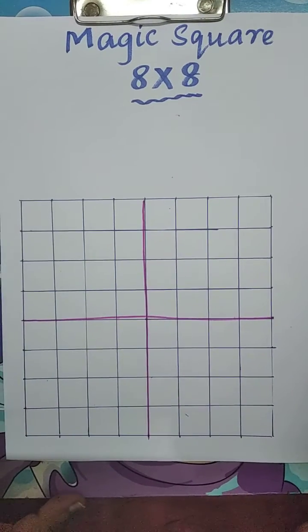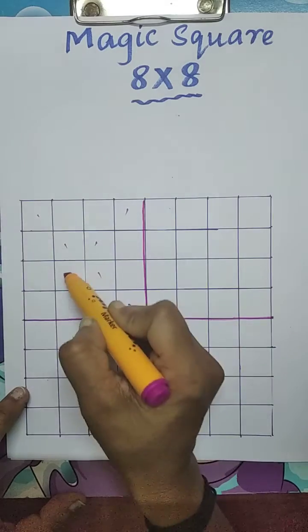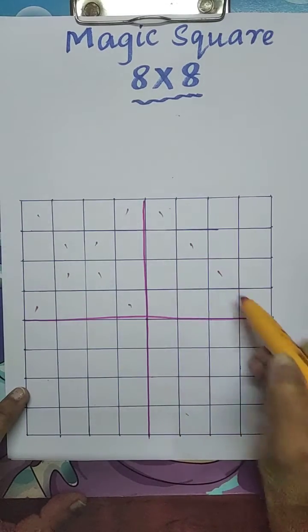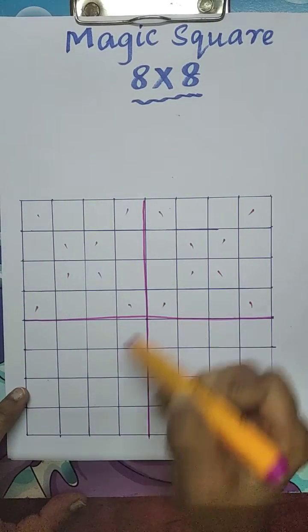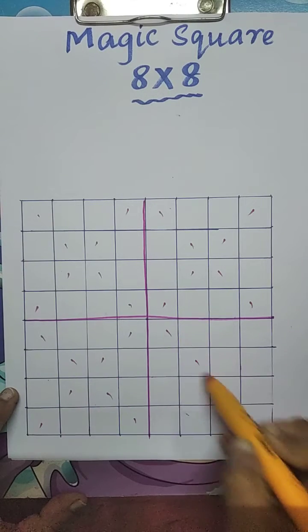Now mark the diagonals like this, 1 by 1. First box completed. Now 2nd box, 3rd box, and 4th box.